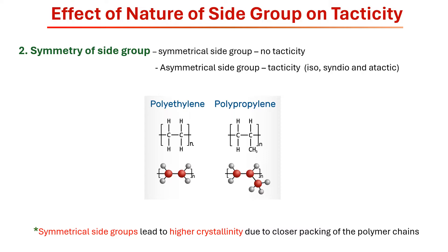Next is the symmetry of side groups. As we know, polymers having an asymmetrical carbon atom in their repeat units show tacticity. For example, polypropylene — in polypropylene, the asymmetrical methyl group leads to different tactic configurations.